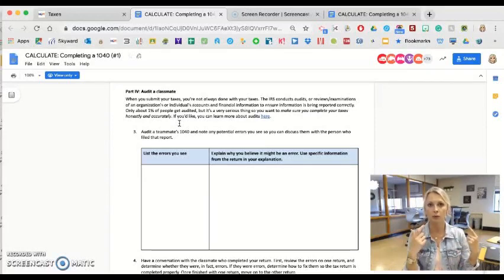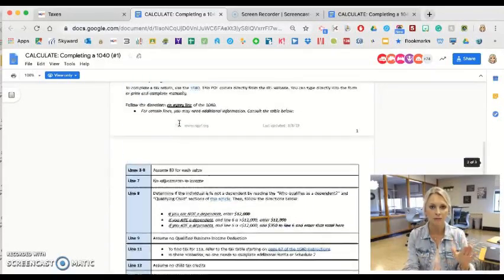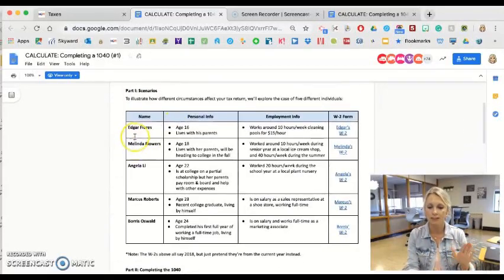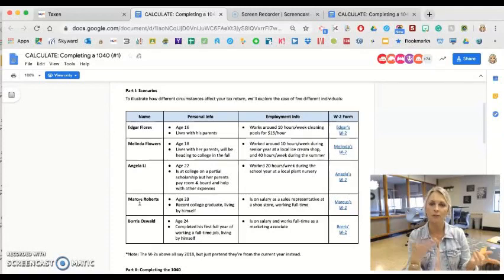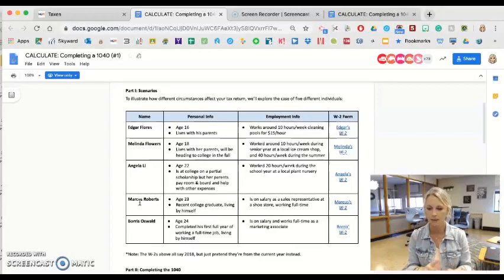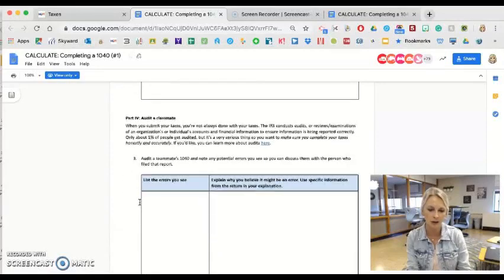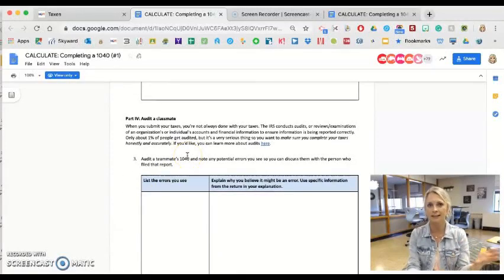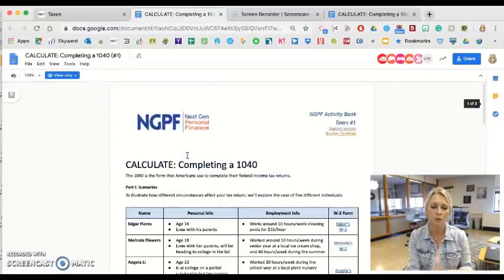Chances are they have the same information as their table group because they've been working together. I have them find someone in the room that's not working at their table and have them compare the 1040 forms for Edgar, Angela, and Marcus, not Melinda since we did Melinda together. Chances are, if they have the same outcome, they're probably right. If they don't, there's probably an error somewhere. Sometimes students will sit down together and compare and go over it together. That's how I do the audit part of this, which isn't exactly standard. I customize this assignment a bit, and it makes it a little quicker to go over the information.